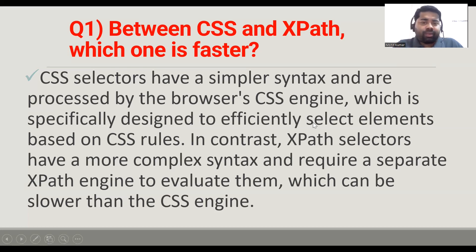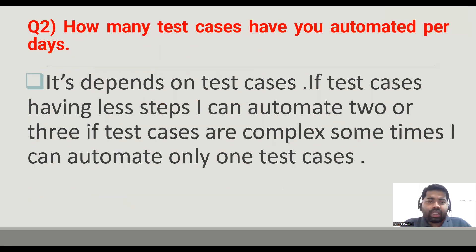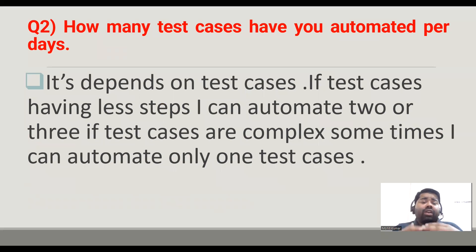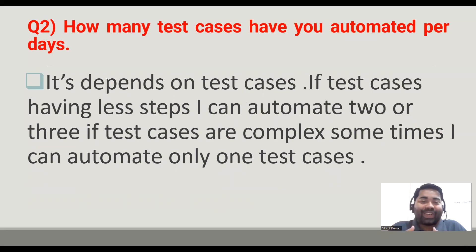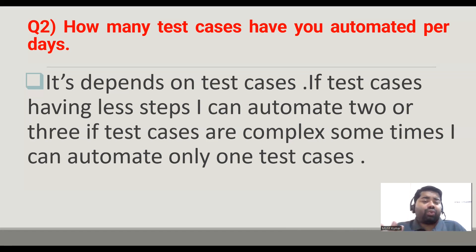The second question is: how many test cases have you automated per day? We have to give a technical answer here — we cannot blindly say 'I am automating four or five test cases.' It depends on the test cases, their complexity, and the flow. If the test case is complex, it can take one day or more. If it has fewer steps and the flow is not complex, we can automate two or three test cases per day.